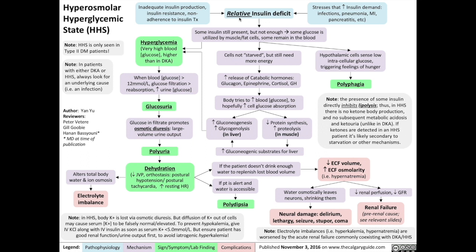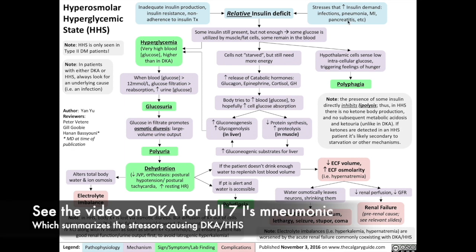What contributes to this relative insulin deficit is inadequate insulin production by the body, insulin resistance in a type 2 diabetic patient, or non-adherence to insulin treatment — combined with stresses that increase insulin demand, such as infections like pneumonia, myocardial infarctions, severe stresses on the body such as pancreatitis, and other sources of stress, which are reviewed in the 7 I's mnemonic in my DKA video.